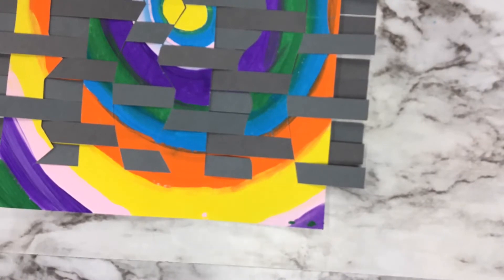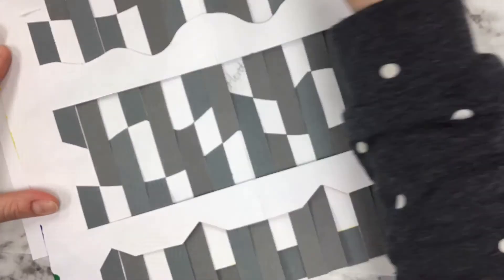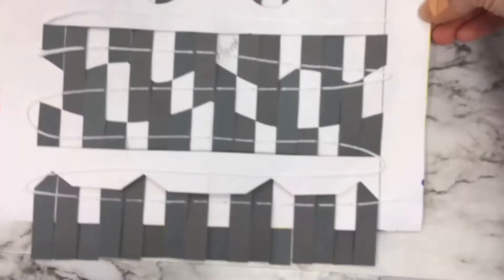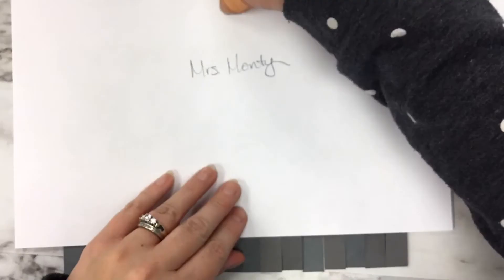The last thing we're going to do is get a second piece of construction paper. Write your name and class code on the back, turn your weaving over, apply glue on the back, and then stick this new piece of paper on top. This will lock all of your strips in place so they don't move.